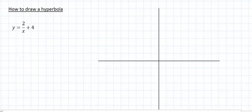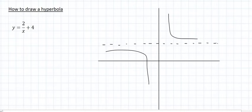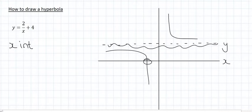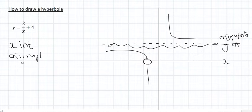If you ever forget what you need to draw a graph, I always suggest just drawing one and that'll remind you. A hyperbola usually has a dotted line, as we saw in the previous videos, and it usually has two halves. So it appears we need to know where it cuts the x-axis — that's the x-intercept — and we need to know where the dotted line is, which is called the asymptote. The main thing is we need to know the x-intercept and the asymptote.